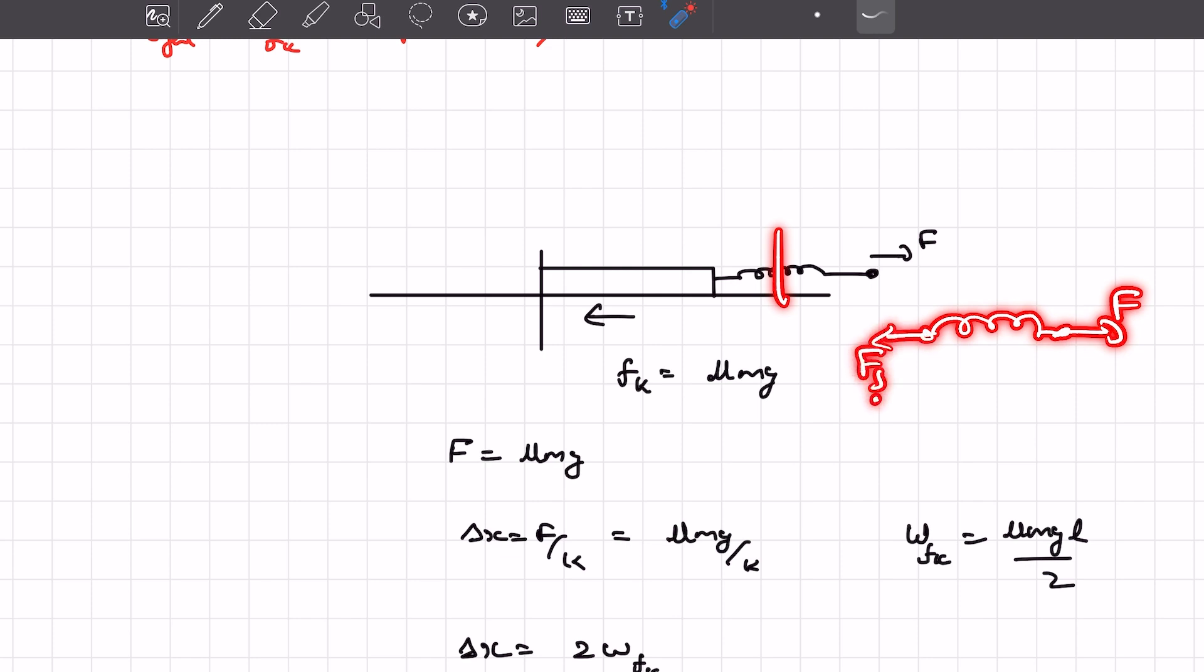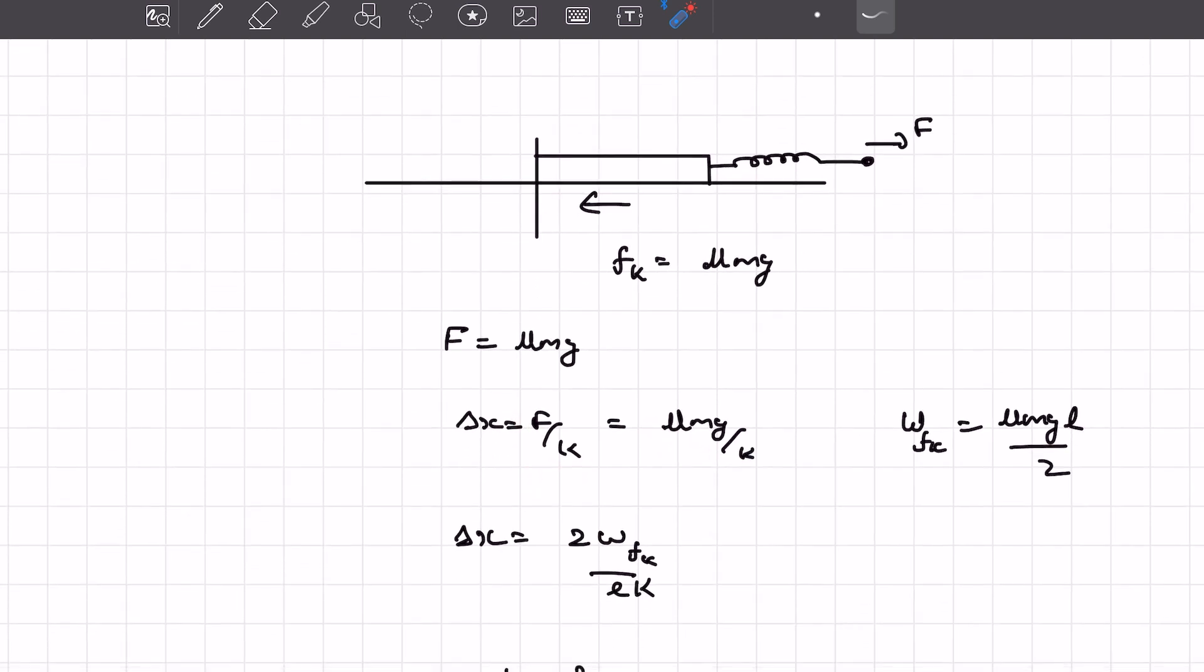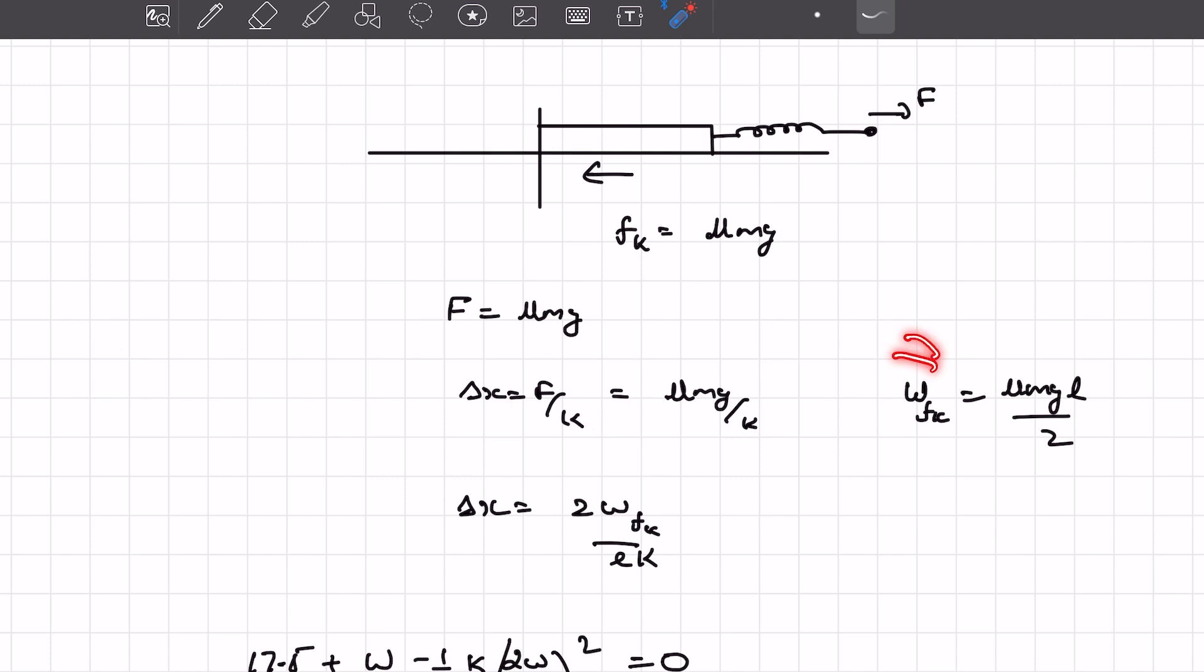this end of the spring is being pulled with F and this end, let's say the spring force is Fs. As the spring is massless, we know Fs must be equal to F. So hence we can write the delta X to be F by K or mu mg by K.